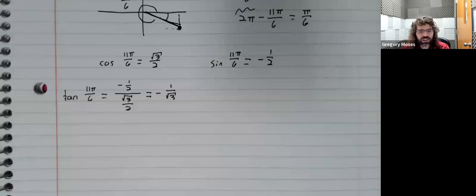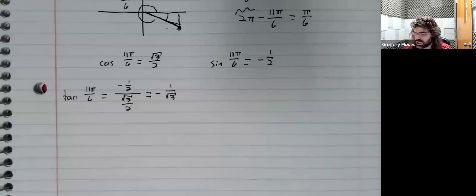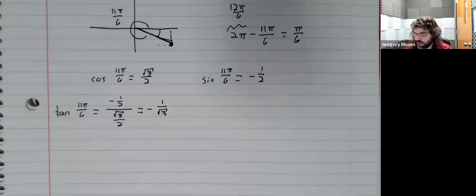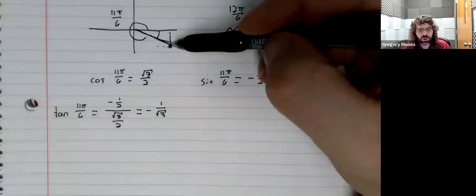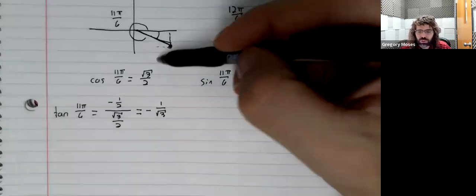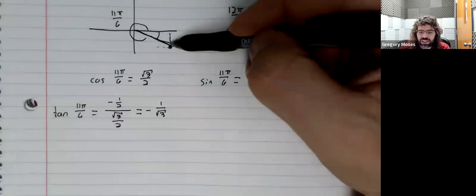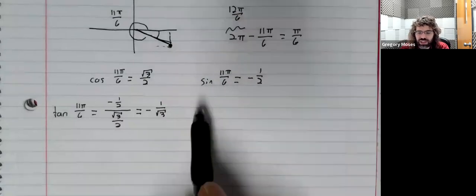I think that's completely unnecessary. We see that the cosine is positive because the x-coordinate's positive. We see that the sine is negative because the y-coordinate is negative.